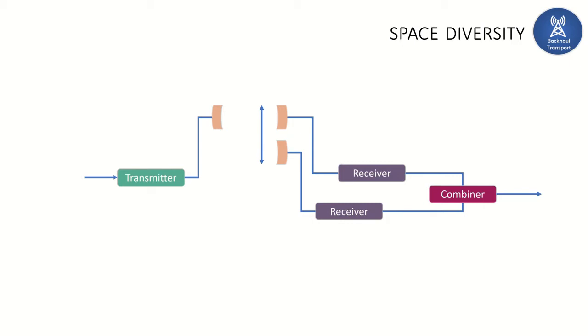There are two different types of diversity techniques: space diversity and frequency diversity. Let's start with space diversity. For example, between site A and site B, there will be a direct signal from site A to site B and a reflected signal from the surface of the earth to the receiving antenna.